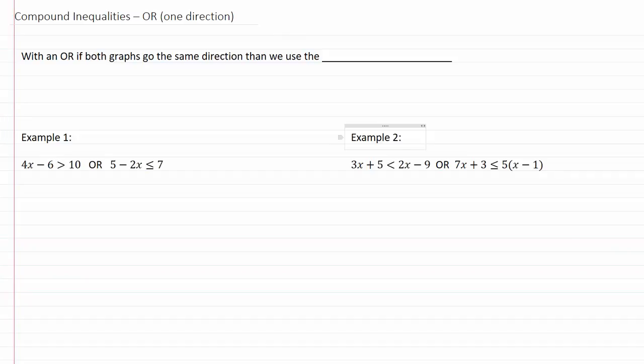Compound inequalities or one direction. With an or, if both graphs go the same direction then we use the larger one. Or another way to think about it is to use the extreme.